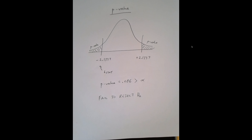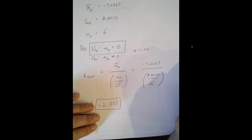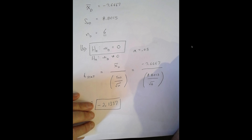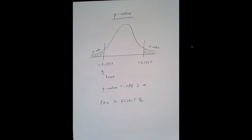Both the p-value and critical value approaches agree: fail to reject the null. The results indicate there's not sufficient evidence to conclude the mean difference is anything other than zero. This is likely a power issue — with such a small sample size, even if a real difference exists, we don't have enough power to detect it statistically. Increasing the sample size to around 30 and rerunning the study would be recommended.